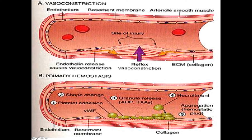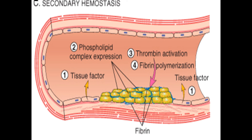There is a problem: the primary hemostatic plug is not stable — it is very weak. That is why you need something to strengthen it, and this will be done by fibrin polymers. First, you have to make the monomers, which will be covered in the next video. Essentially, the fibrin strands — visualized here in blue — will strengthen the platelet plug.